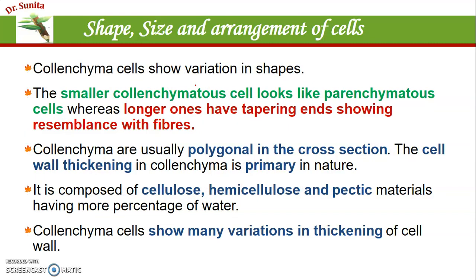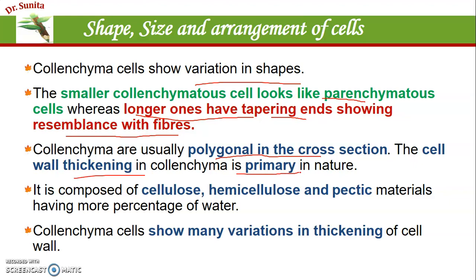There are various variations in shape and size. Smaller colenchyma cells look like parenchyma cells, while longer ones have tapered ends resembling sclerenchyma fibers. In cross-section, cells may appear polygonal. The cell wall is primary in nature — there is no secondary cell wall formation; only primary cell wall with pectin substance deposition. This primary cell wall contains cellulose, hemicellulose, pectic substance, and a high percentage of water.